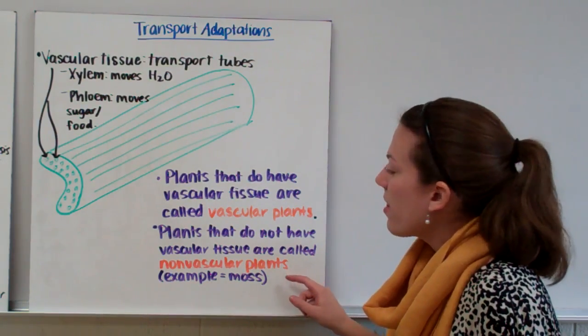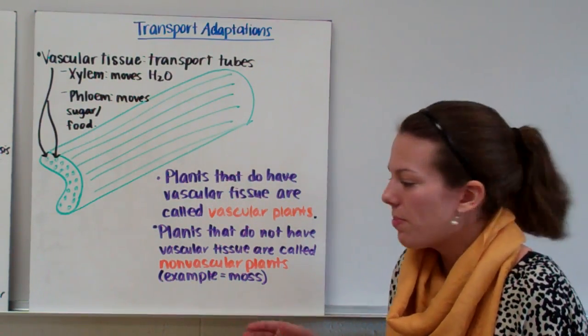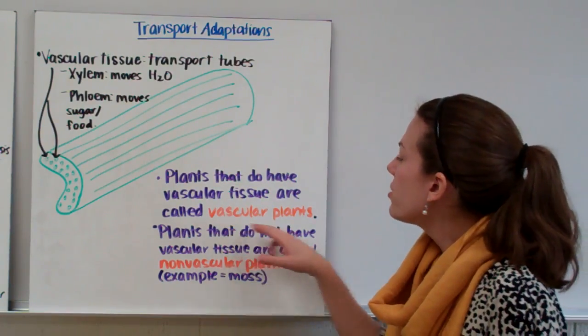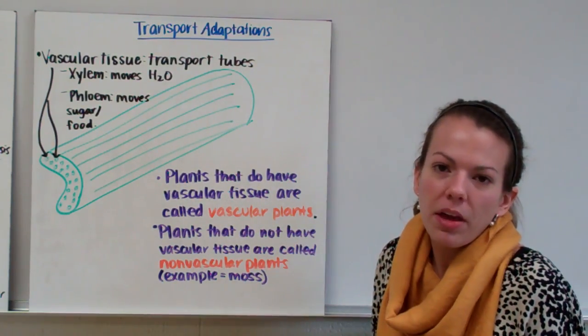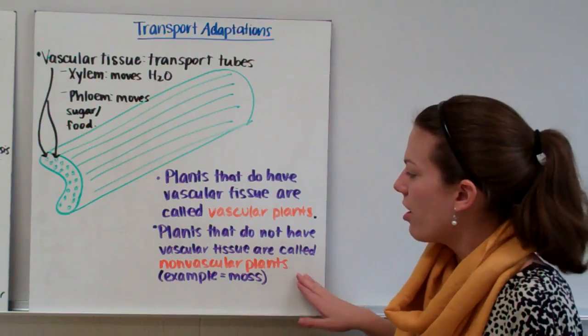Now in class, the only nonvascular plants that you need to know about are moss. And vascular plants are pretty much any other plant that you can think of. So moss are our nonvascular plants.